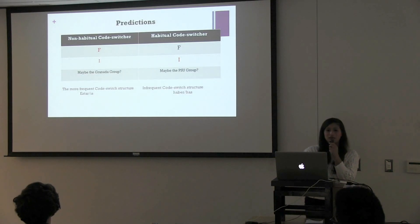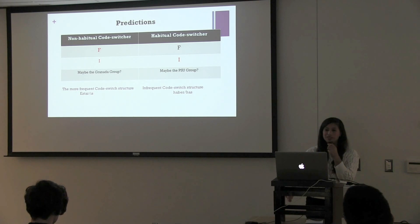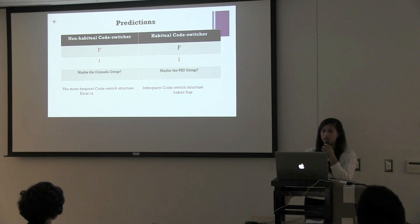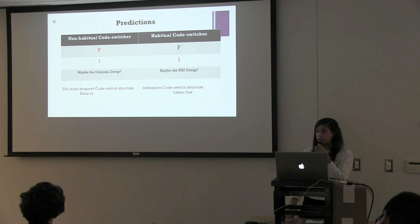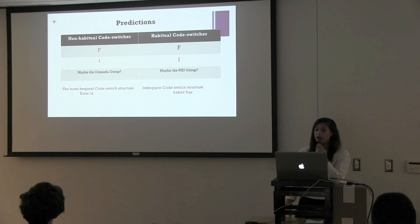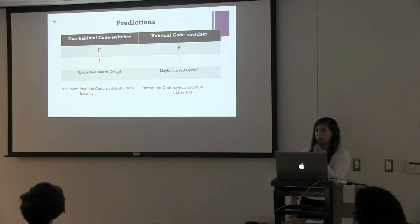My predictions for my experiment: for the non-habitual code switchers in Granada, I predicted that both frequent and infrequent code switches would not be easily primable, because both would be infrequent for them. For the U.S. group, which I am currently testing, who are the habitual code switchers, while I predict that both may be primable, I believe that infrequent code switches would be more primable than frequent code switches.